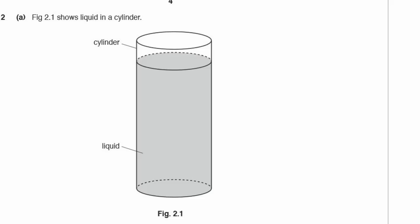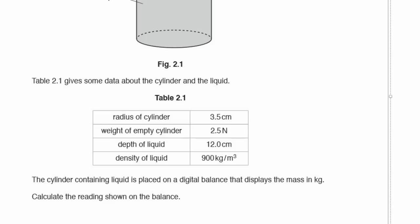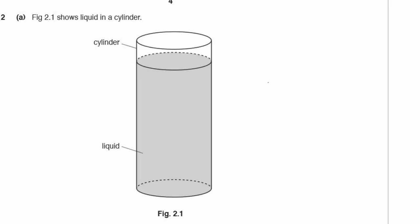Question 2. Figure 2.1 shows liquid in a cylinder. Table 2.1 gives data about the radius, weight, depth, and density. The cylinder containing liquid is placed on a digital balance displaying mass in kilograms. We need to calculate the reading shown on the balance — that is, the total mass, which is the mass of the cylinder plus the mass of the liquid.